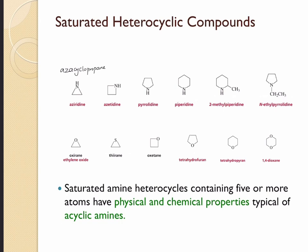Here we have totally four atoms in the ring structure, and because one of the carbons has been replaced with nitrogen, it's called aza cyclobutane. On the next compound we have five atoms in the ring structure, and therefore this should be aza cyclopentane.